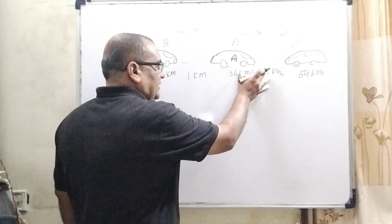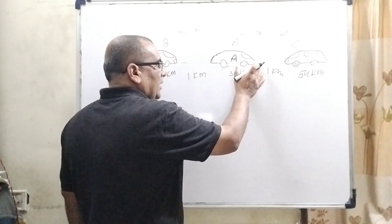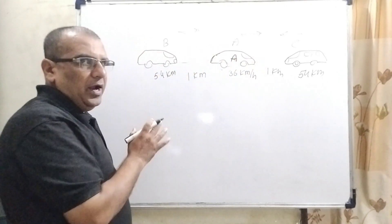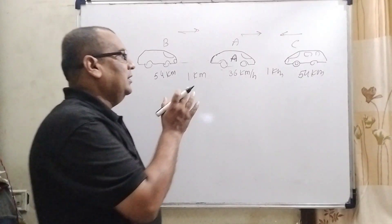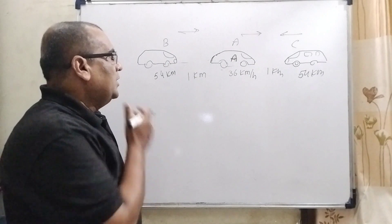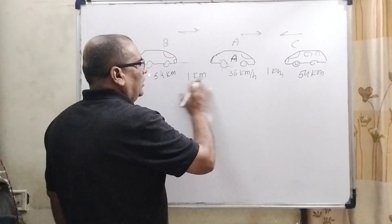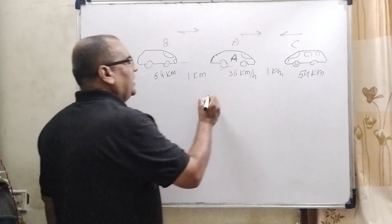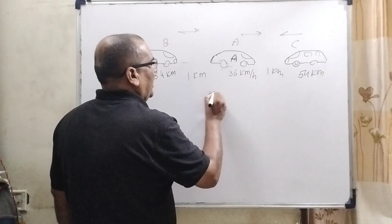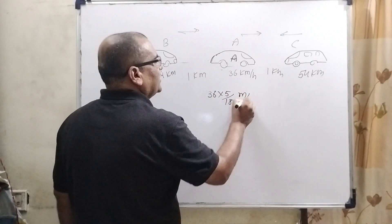To avoid the accident, B wants to overtake. So, what acceleration is required? This question is related to relative velocity. So, let us first convert all these speeds from km per hour into meter per second. You know that we have to multiply by 5 by 18 to convert to meter per second.